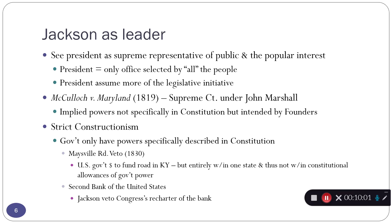Jackson is a strict constructionist but he also takes a much more active, borderline unconstitutional role in guiding the legislative agenda. But he does in other cases operate as a strict constructionist. He says: if there are bills that Congress passes that I think don't fall in line with constitutional allowances of government power, I'm going to veto them. And one of those happens in 1830.